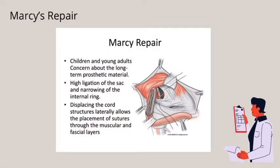Secondly, we have Massi's repair. In Massi's repair, for children and young adults concerned about long-term prosthetic material, the approach involves high ligation of the sac and narrowing of the internal ring. Displacing the cord structures laterally allows the placement of sutures through the muscular and fascial layers.